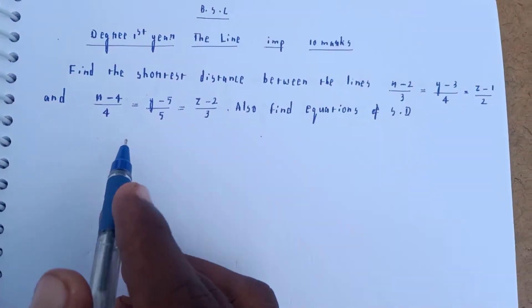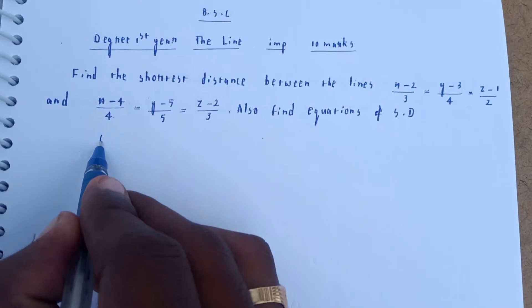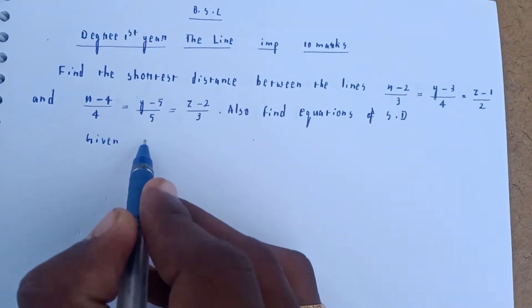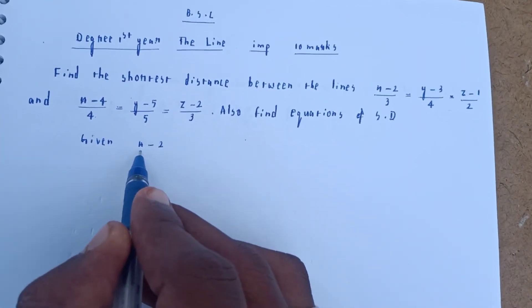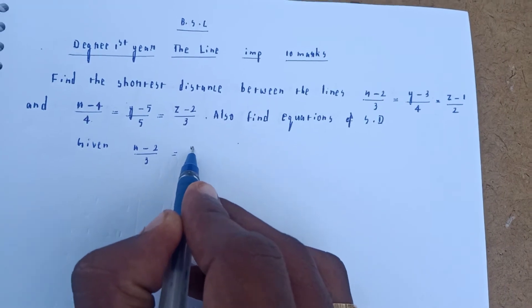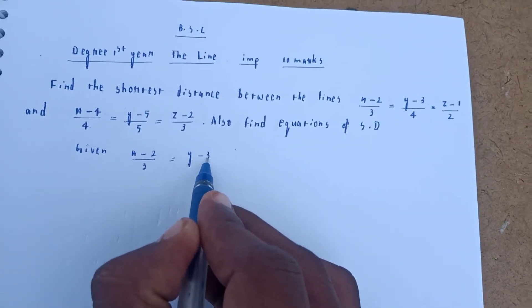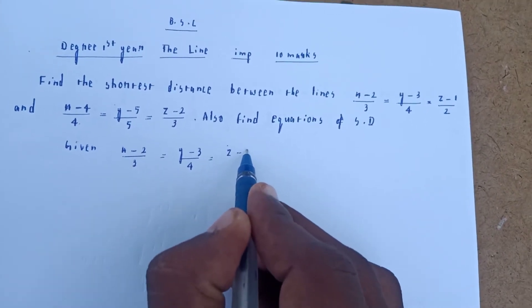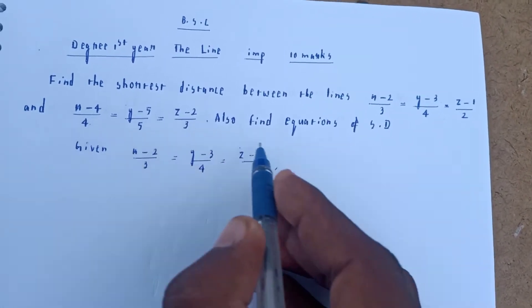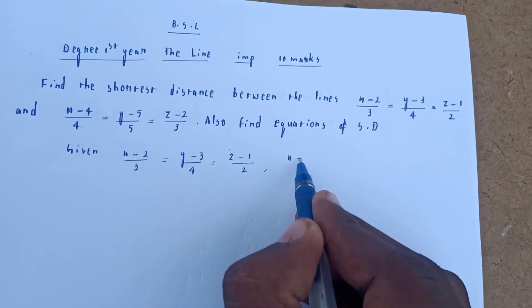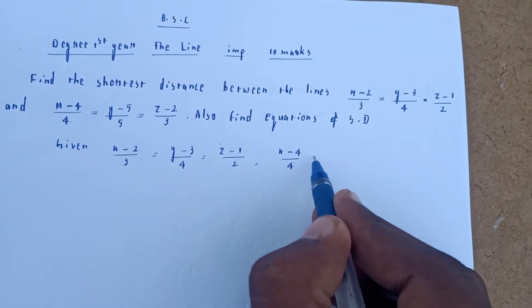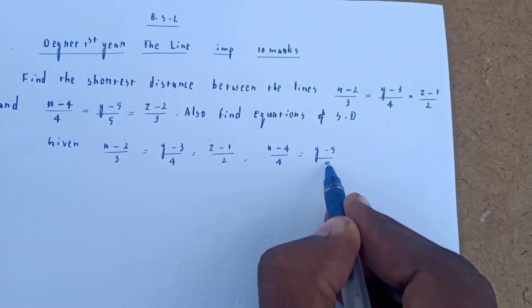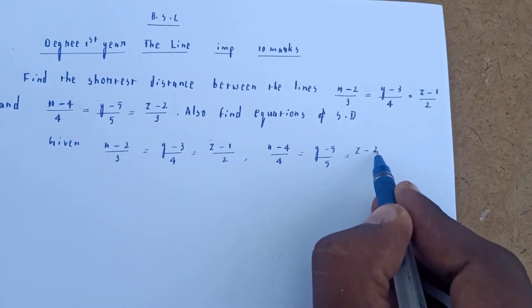First, let's note the given lines. The first line is (x−2)/3 = (y−3)/4 = (z−1)/2. The second line is (x−4)/4 = (y−5)/5 = (z−2)/3.